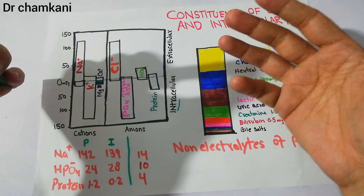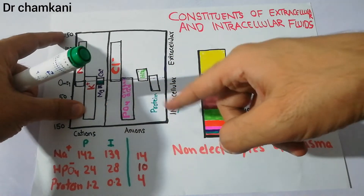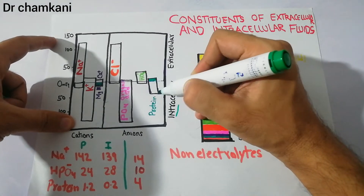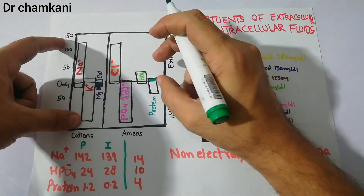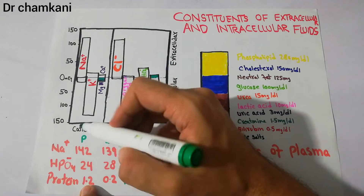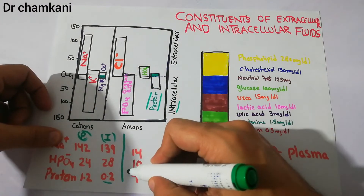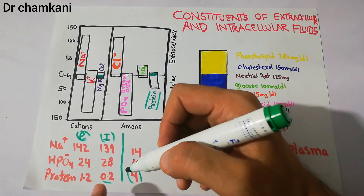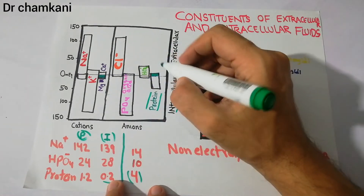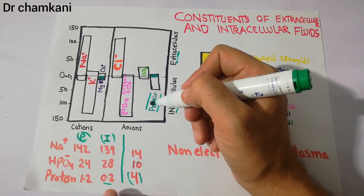Looking at the negative ions or anions, the concentration of phosphate, other organic acids, and proteins is higher in the intracellular fluid and very small in the extracellular fluid. Within the extracellular fluid, protein concentration is high in the plasma but very low in the interstitial fluid, whereas protein concentration in the intracellular fluid is many times higher than in the extracellular fluid overall.